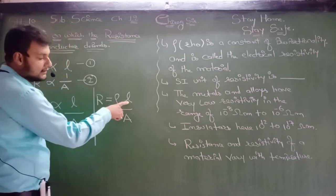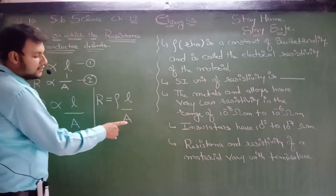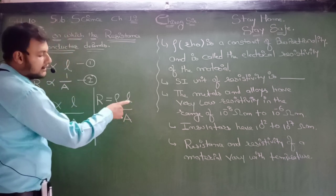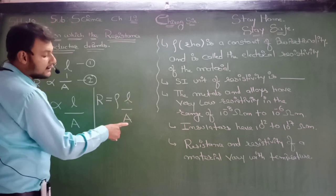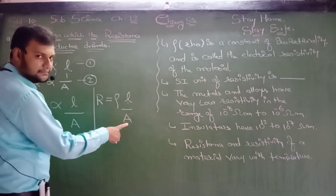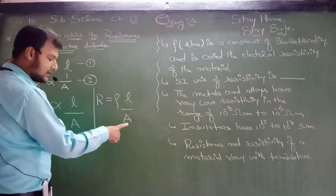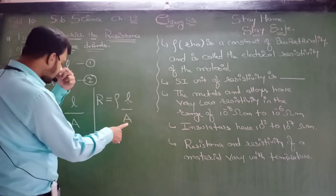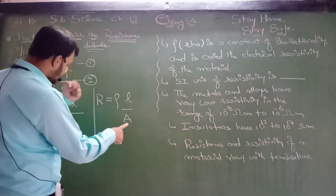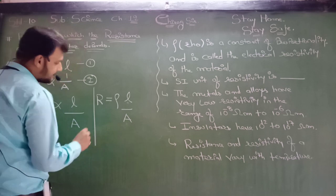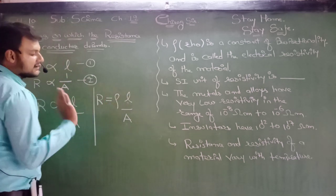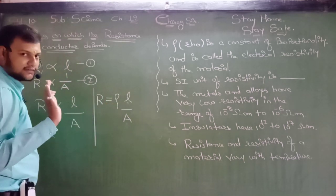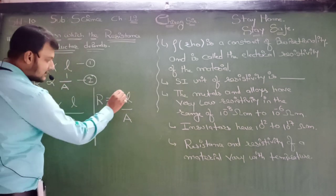This is L — L for the length. This is A — A for the area. So this is the resistance formula, dear students. I hope you are able to understand.